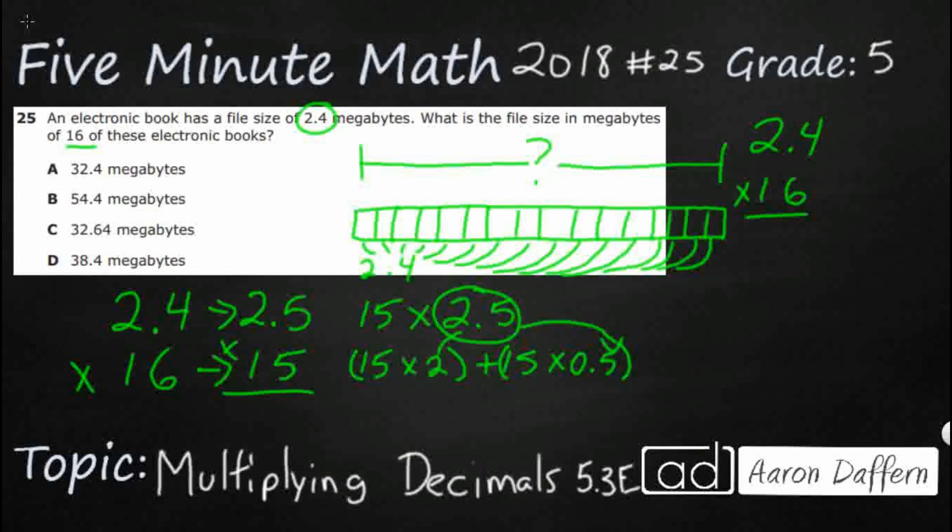So 15 times 2. Well, that's going to be just double 15. That's 30. And 15 times 0.5. So I need to take, remember this is half, so I need to take half of 15. So most of us can mentally do that. This can be 7.5. 15 times 0.5 is half. That's 7.5. So that gives me an estimate of about 37.5.